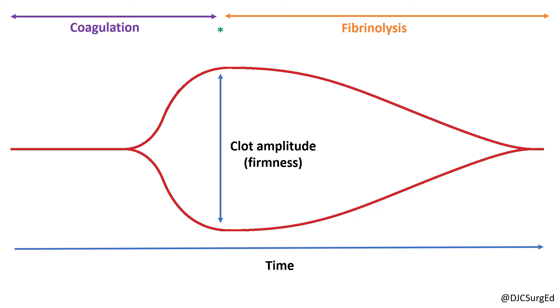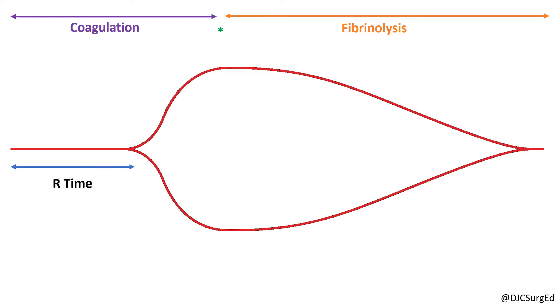To understand TEG, let's take a look at each of the components of the graph. The first is the clotting or reaction time, R time, which reflects fibrin generation and the onset of clot formation.